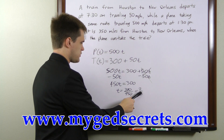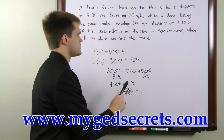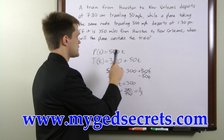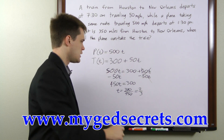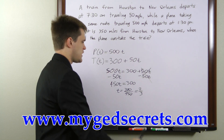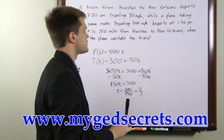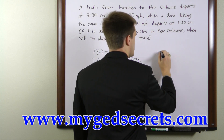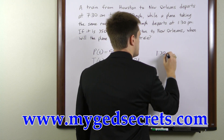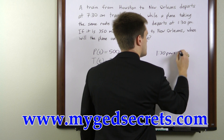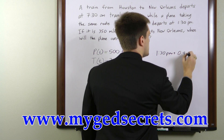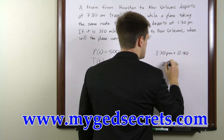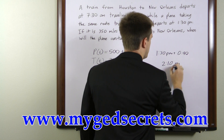So two-thirds of an hour is the time past 1:30 that it takes for the plane to overtake the train. Two-thirds of an hour is 40 minutes, so we'll add 40 minutes to 1:30 p.m., and that gives us 2:10 p.m.